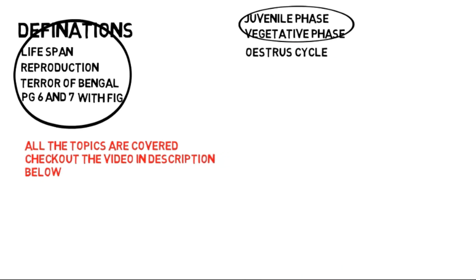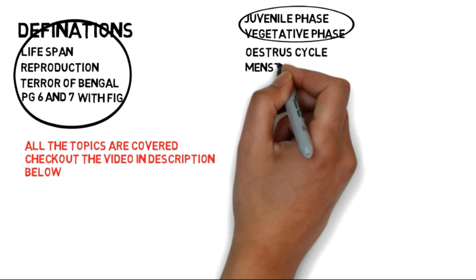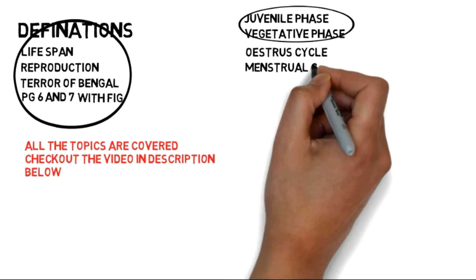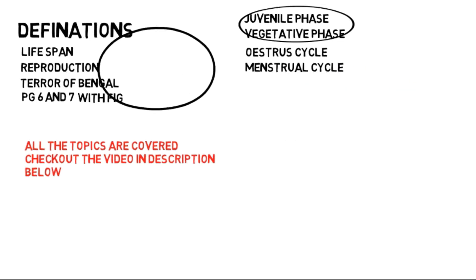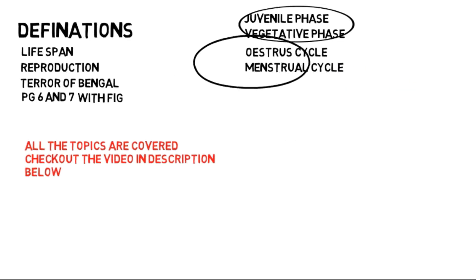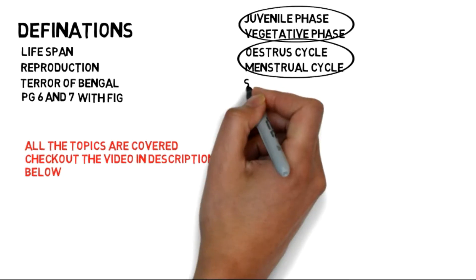Oestrus cycle and menstrual cycle — the bleeding cycle. Oestrus cycle is seen in non-primates and the menstrual cycle is in primates.